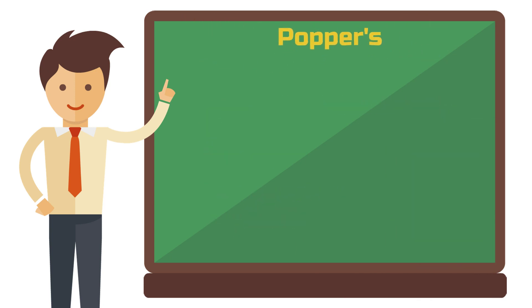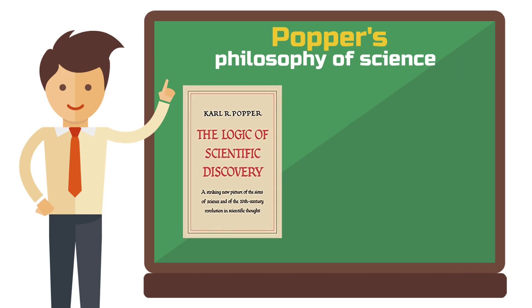But why was Popper's work so important? Until his book The Logic of Scientific Discovery was published, it was not really defined when a methodology was considered scientific and when it was not. This is also called the demarcation problem. That is, the dividing line between science and non-science.